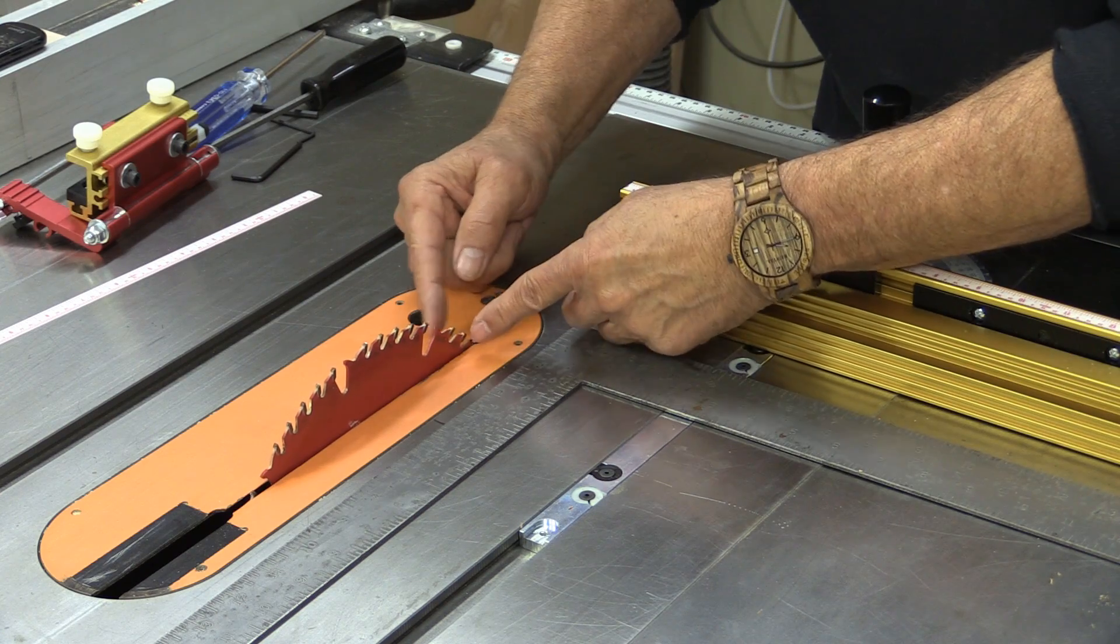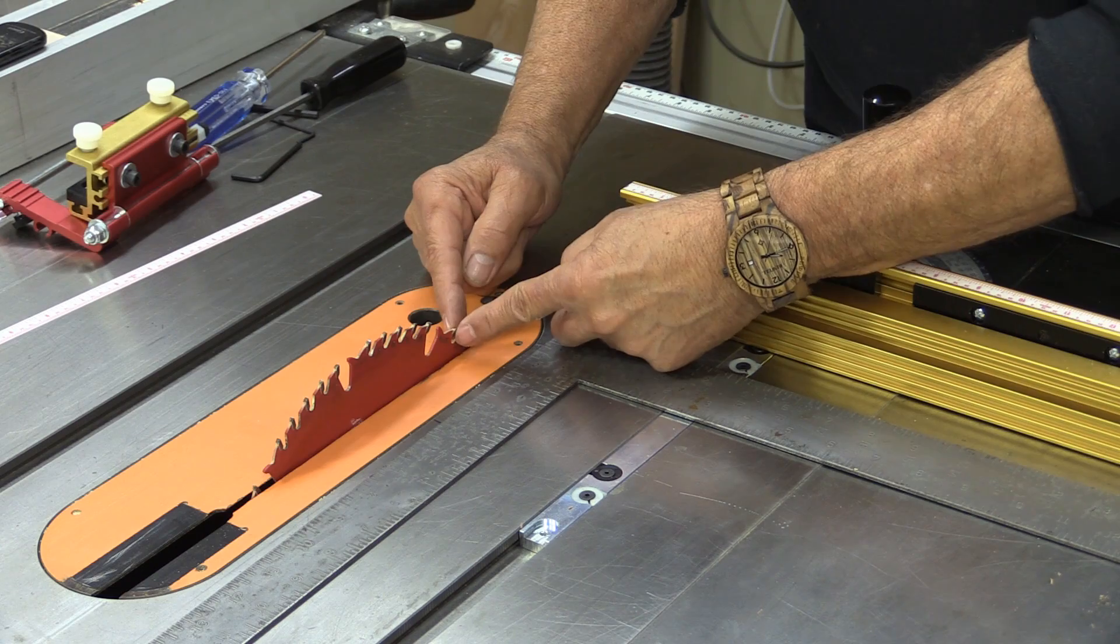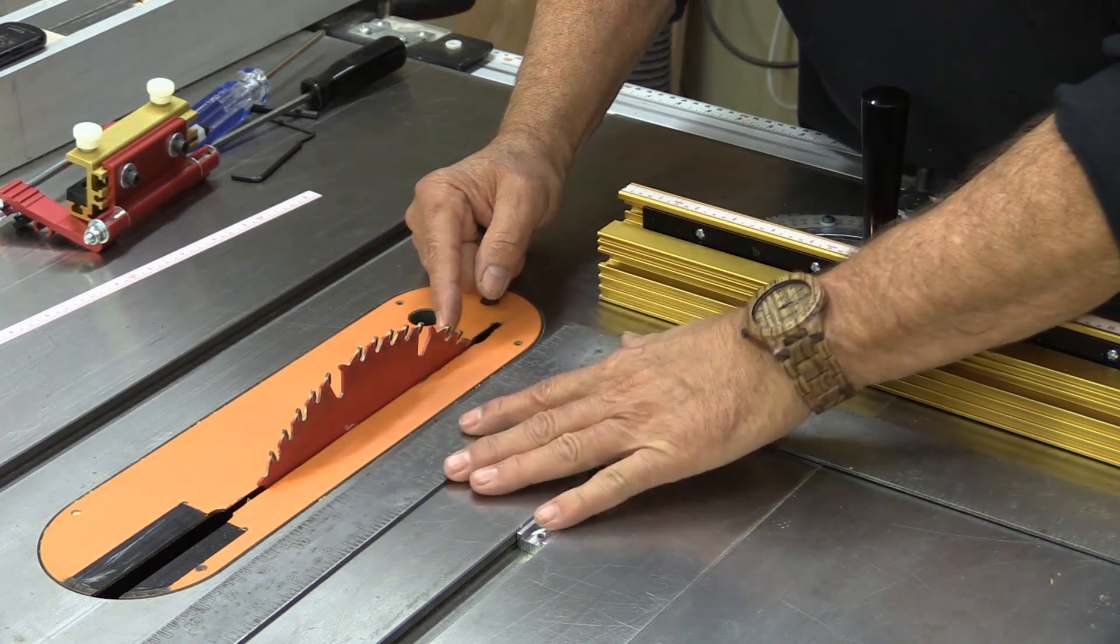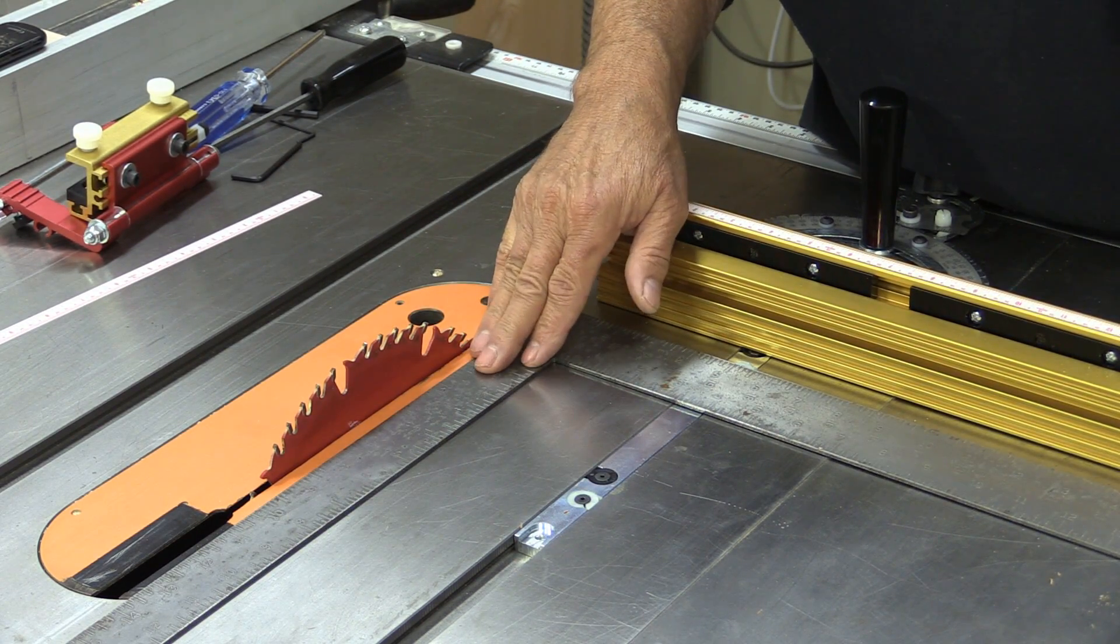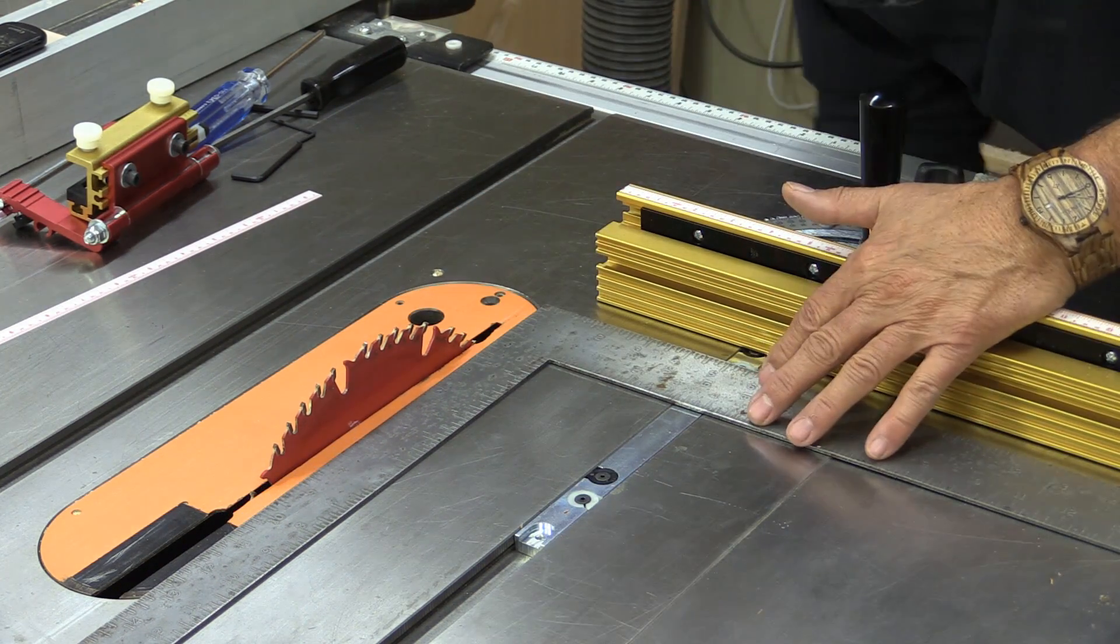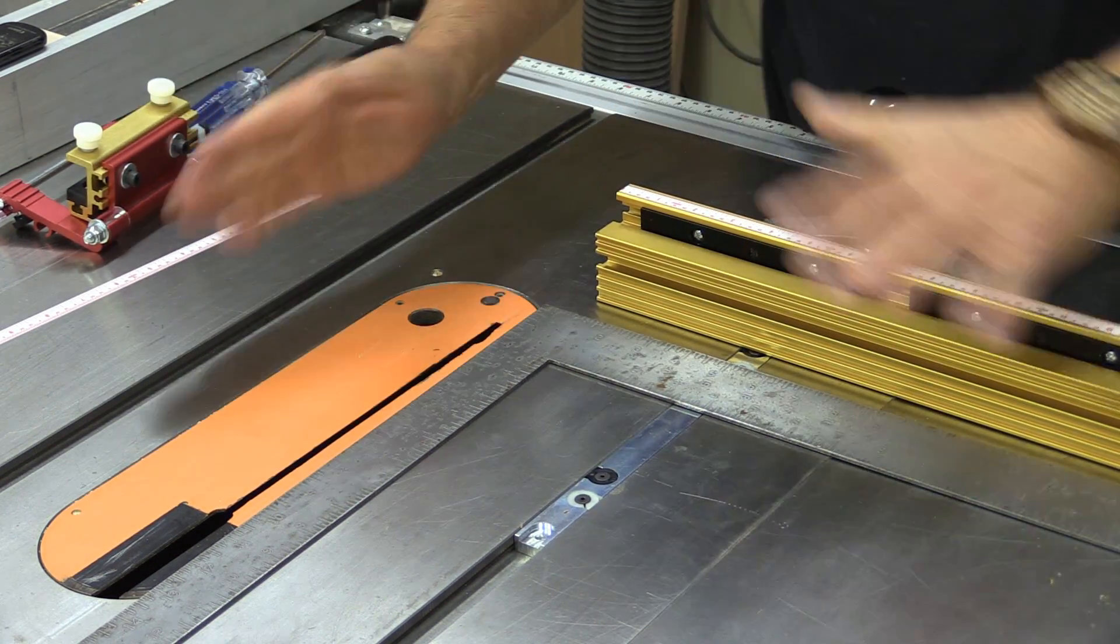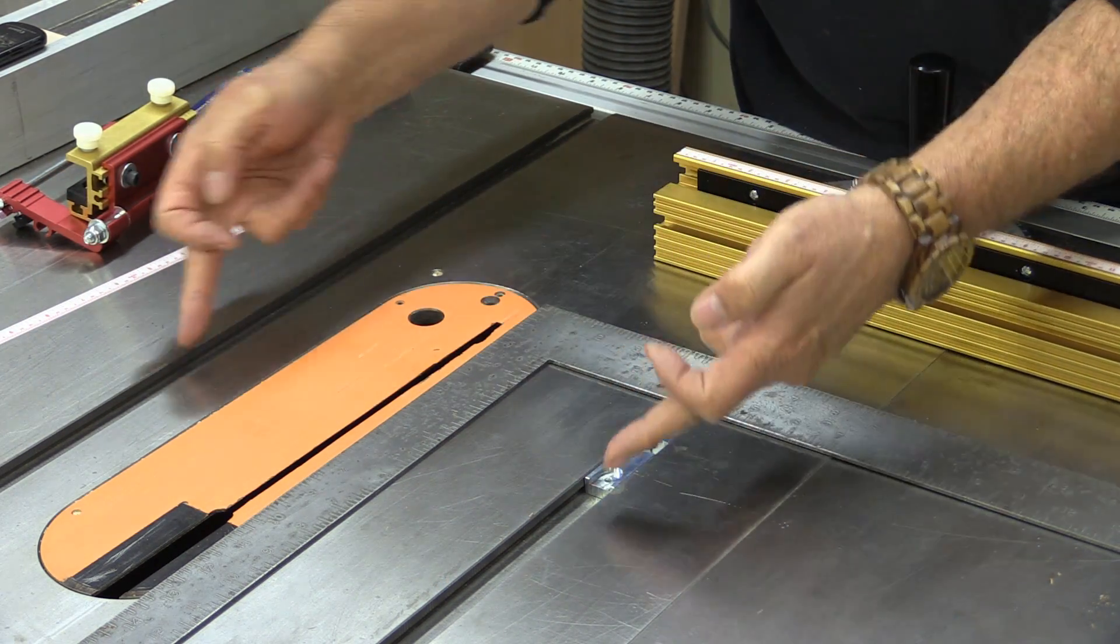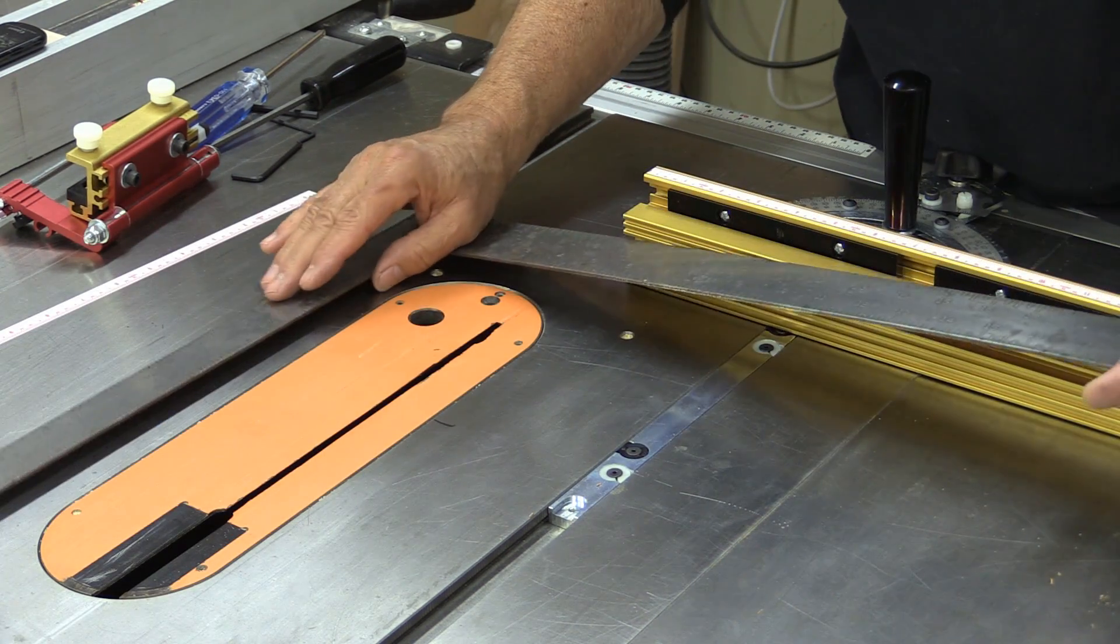Here's why: some blades have a fairly thick carbide and sometimes when you put a square on there, you're on the carbide on one end but not on the other. So the square is actually twisted a tiny bit. Anytime I'm aligning anything on the table saw, everything is aligned to the miter slots. The blade is aligned to the miter slots, the miter gauge is aligned to the miter slots.